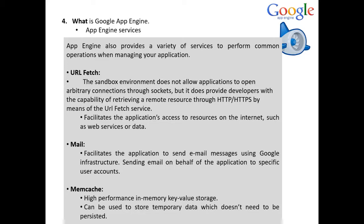Memory caching is another application service. In App Engine, a high-performance scalable web application often uses a distributed in-memory data cache in front of or in place of robust persistent storage for some tasks. One use of Memcache is to speed up common Datastore queries: if many requests make the same query with the same parameters and changes to the results do not need to appear on the website right away, the application can cache the results in the memory cache.